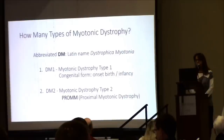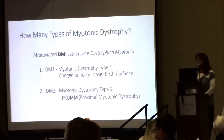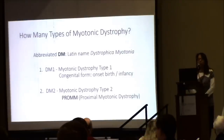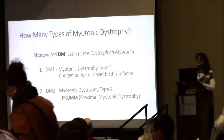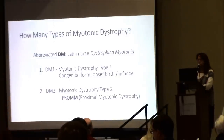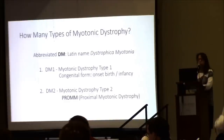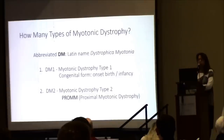There are two different types of myotonic dystrophy, abbreviated from the Latin name dystrophica myotonica: type 1 (DM1) and type 2 (DM2). The key distinction is that type 2 is less common and does not have a childhood form, whereas myotonic dystrophy type 1 can present at birth as well as in childhood.